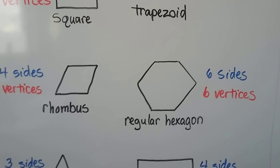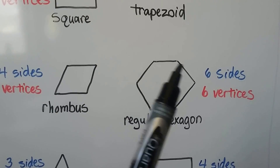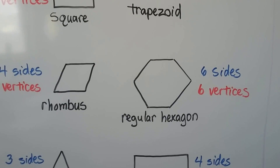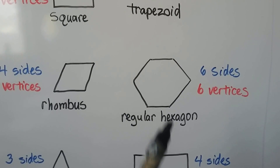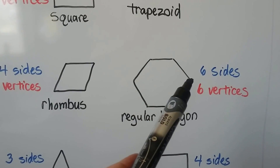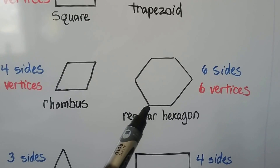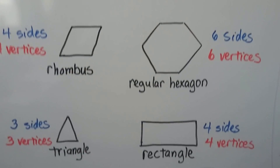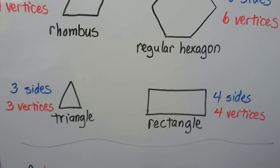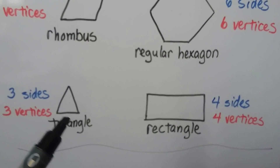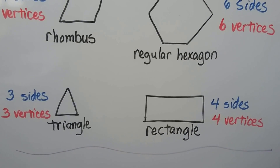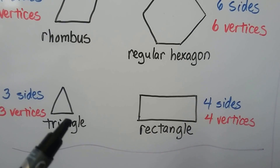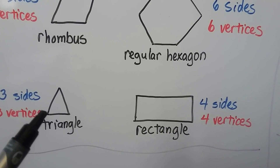A regular hexagon has six sides — one, two, three, four, five, six — and it has six vertices: one, two, three, four, five, six. A triangle has three sides — one, two, three — and it has three vertices: one, two, three.